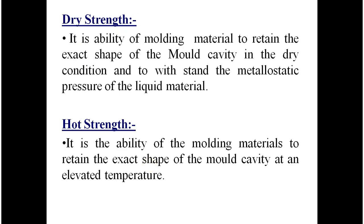Dry strength is the ability of the molding material to retain the exact shape of the mold cavity in a dry condition and to withstand the metallic static pressure of the liquid material. When molten metal is poured, the sand around the mold cavity is quickly converted into dry sand as moisture evaporates due to heat. At this stage, the molding sand must possess sufficient strength to retain the exact shape and withstand the metallostatic pressure.